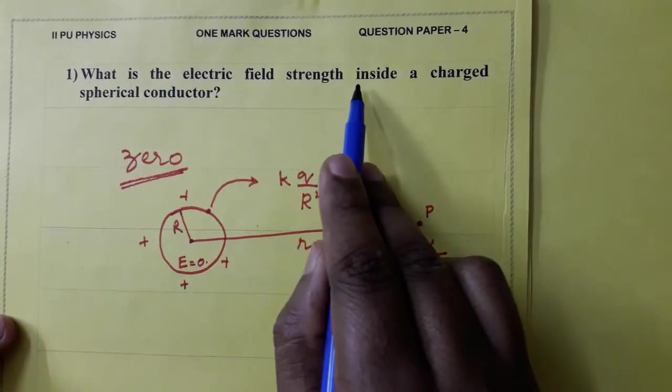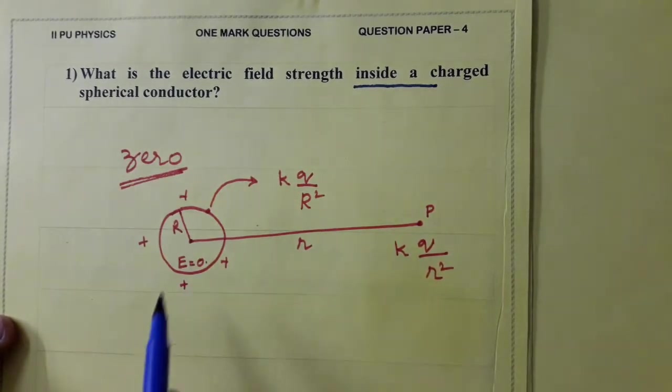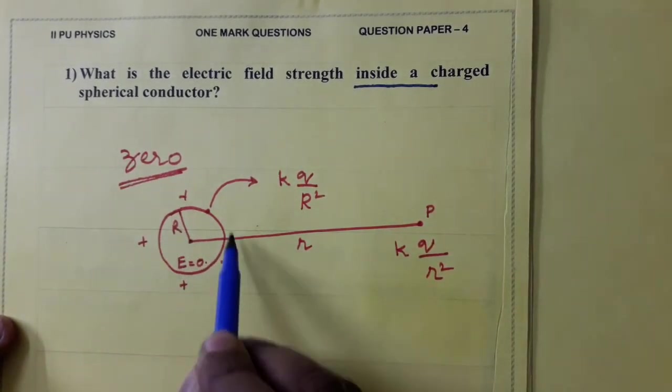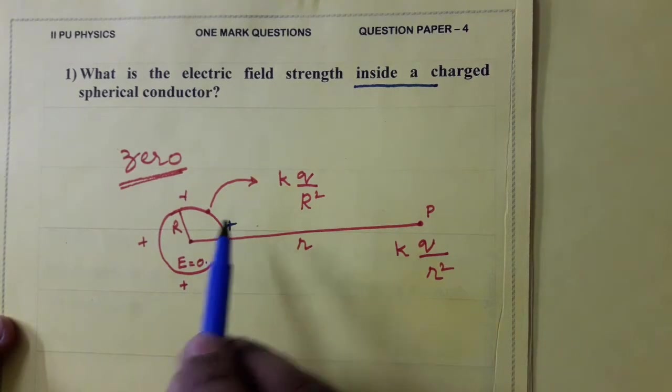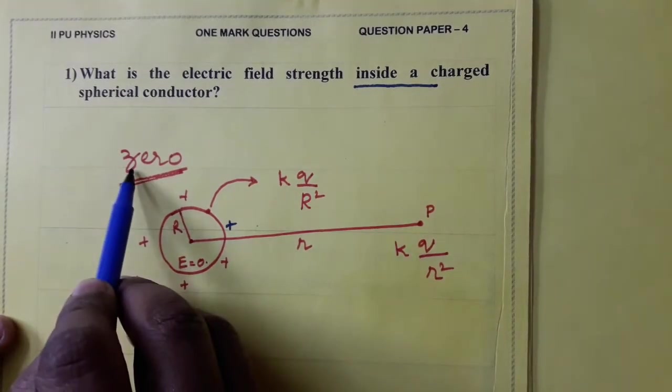What is the electric field strength inside a charged spherical conductor? If this is a spherical conductor charged, then electric field intensity inside the shell is zero. This is from the application of Gauss theorem. So, answer is zero.